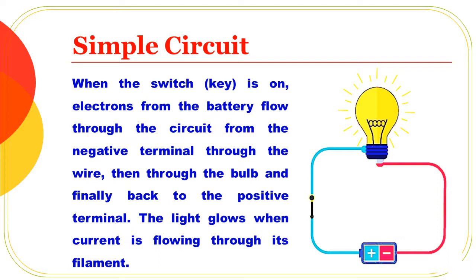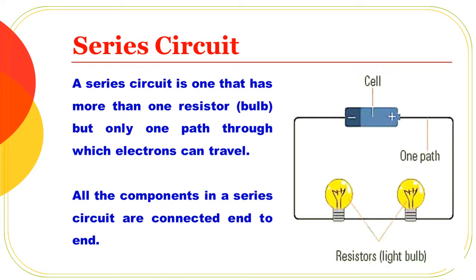The light glows when current is flowing through its filament. Next, the series circuit. A series circuit is one that has more than one resistor, and electrons can travel through only one path. All the components in a series circuit are connected end to end.